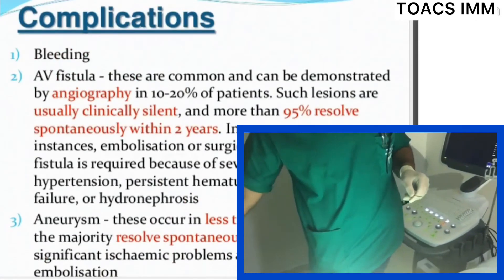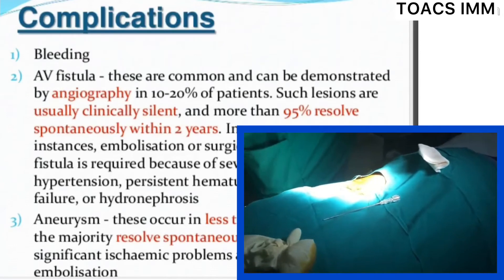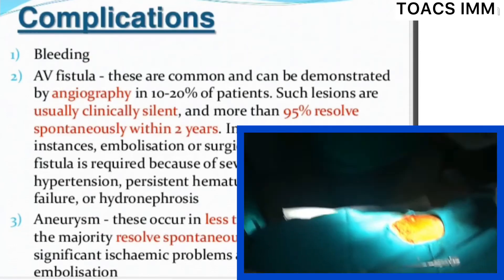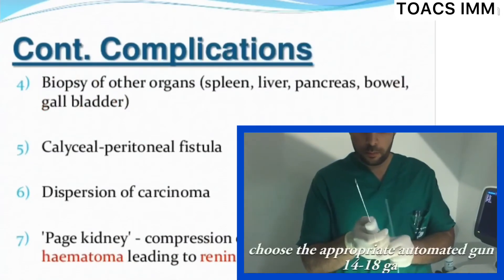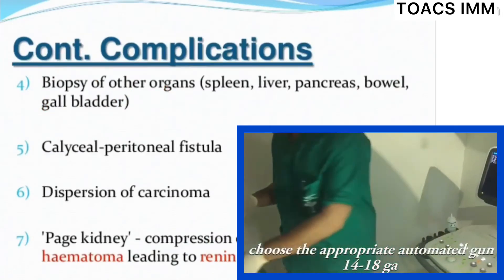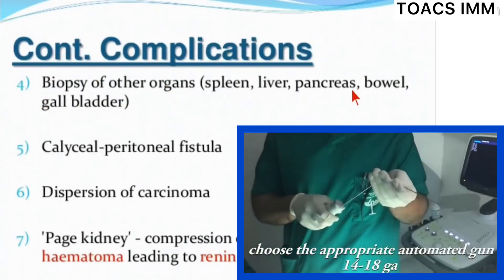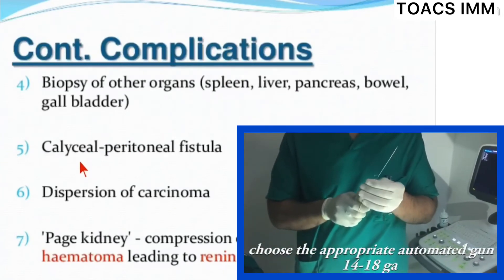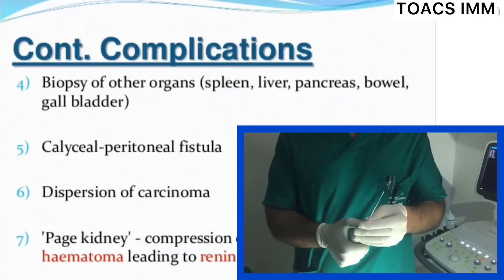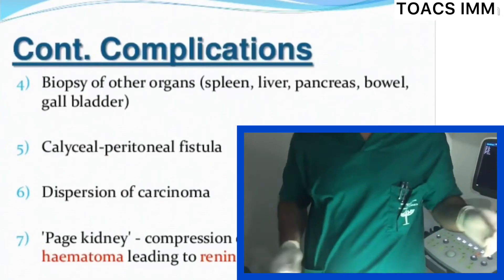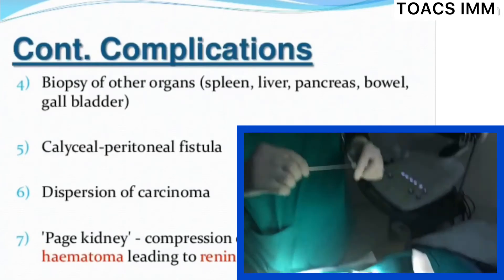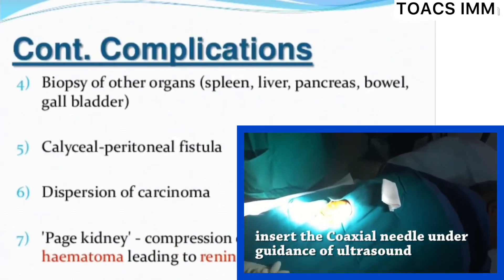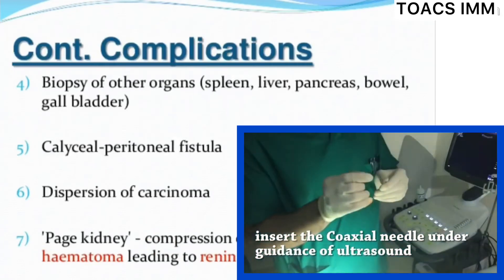Complications of renal biopsy include: the most common is bleeding, arteriovenous fistula, and aneurysm. Biopsy of other organs such as spleen, liver, pancreas, or bowel may occur. Other complications include calyceal or peritoneal fistula, dissemination of renal carcinoma, and perinephric hematoma leading to renin-mediated hypertension.